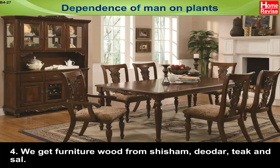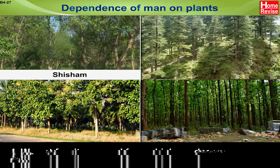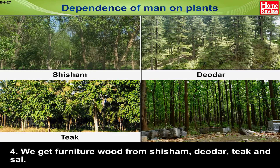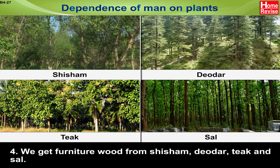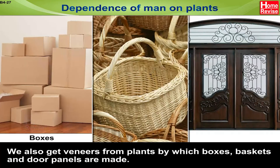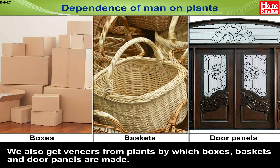We get Furniture Wood from Shisham, Deodar, Teak and Sal. We also get Veneers from Plants by which Boxes, Baskets and Door Panels are made.